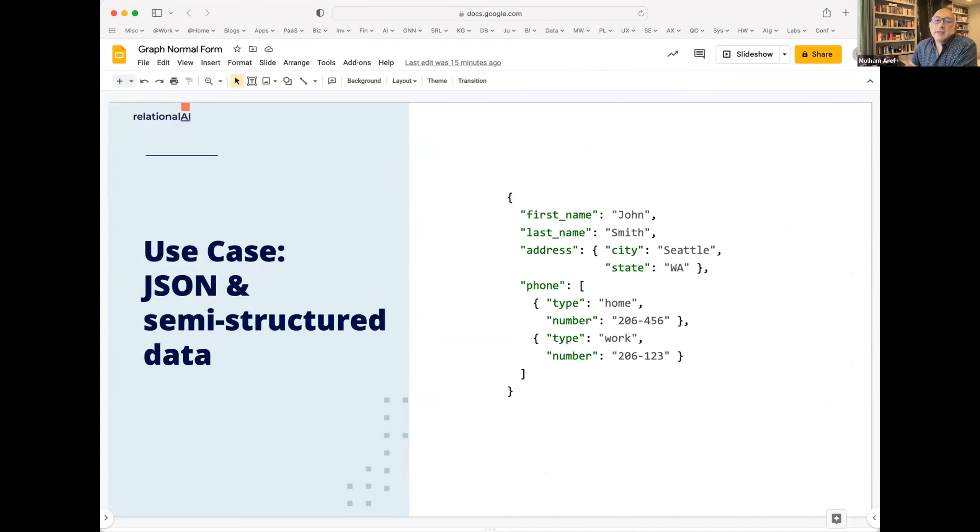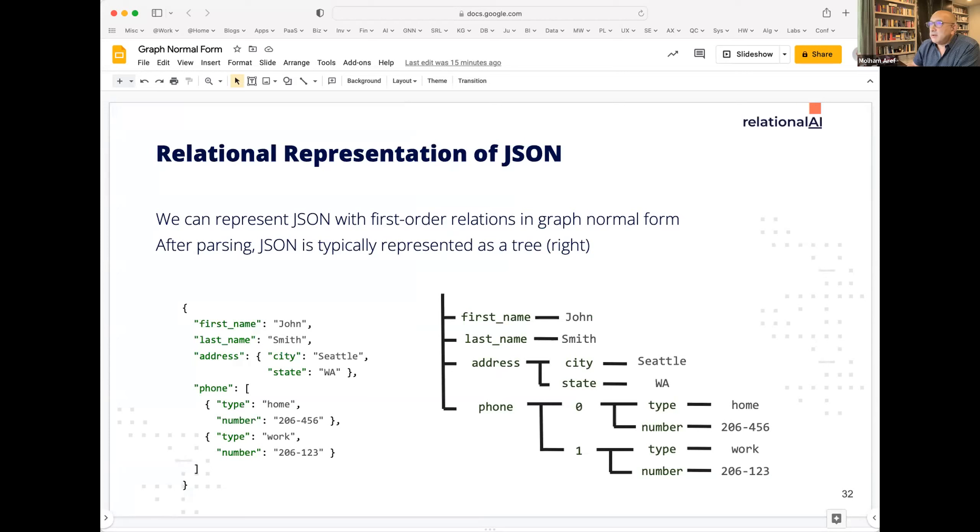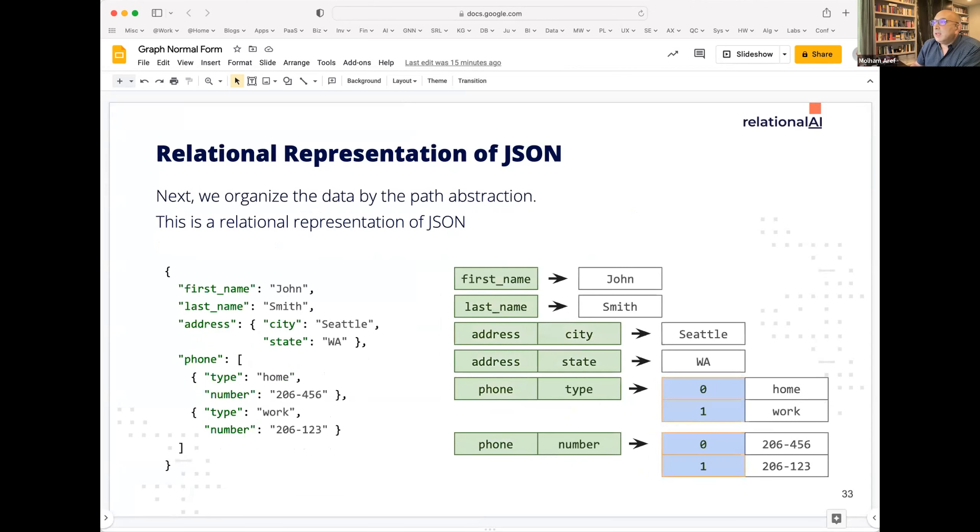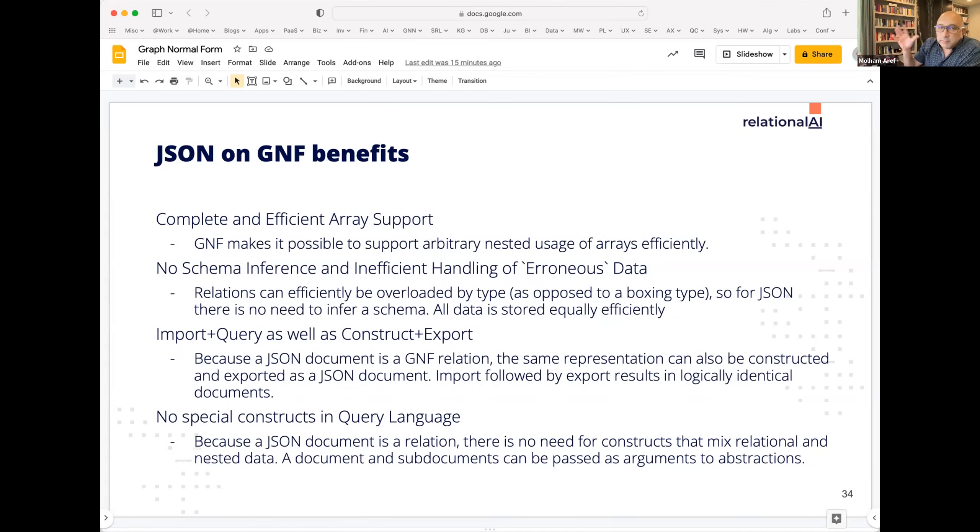Another use case is a JSON use case. Lots of systems implement special support for JSON, or if they have partial support for JSON, they might partially shred the JSON document, but not fully. It doesn't take much of an insight here to see how, if you have graph normal form as a target, you can take any JSON document and map it to graph normal form. And as you do, you organize these nested structure of these documents, you can see these as being keys that have symbols that map to the values that are in the JSON document.